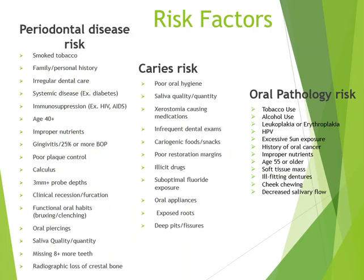Some risk factors could be periodontal disease risks, such as smoking tobacco, having family or personal history of periodontal disease, irregular dental care, having systemic diseases such as diabetes, immunosuppression from things like HIV or having AIDS, being 40 years old or older, improper nutrients, having gingivitis, or 25% or more bleeding on probing, and poor plaque control. Of course, we know plaque causes periodontal disease.